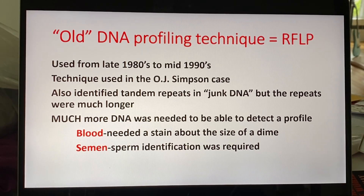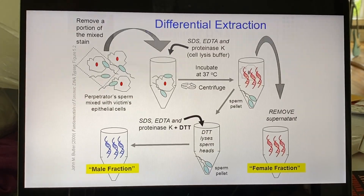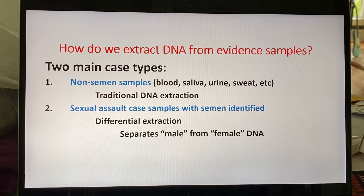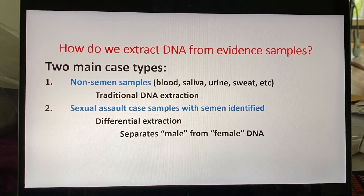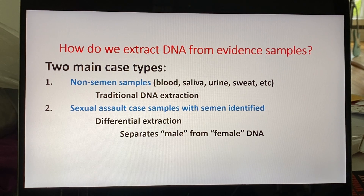Continuing in PowerPoint number two. Remember, we finished up with DNA extraction. DNA extraction just means taking whatever cells or material the DNA is in — whether it's bone, teeth, epithelial cells, sperm, whatever — and purifying that DNA so we can do further work on it and get to the actual DNA type from the person in terms of the repeating boxcars. So that's what extraction means: getting the DNA in pure form.